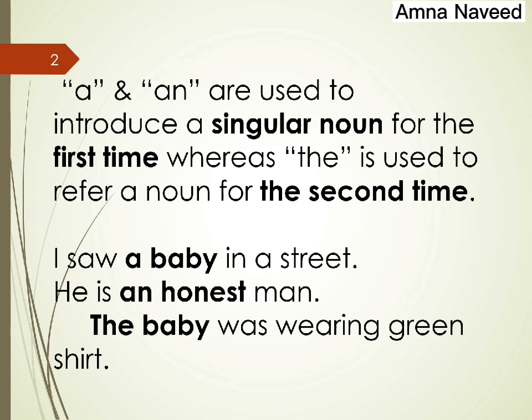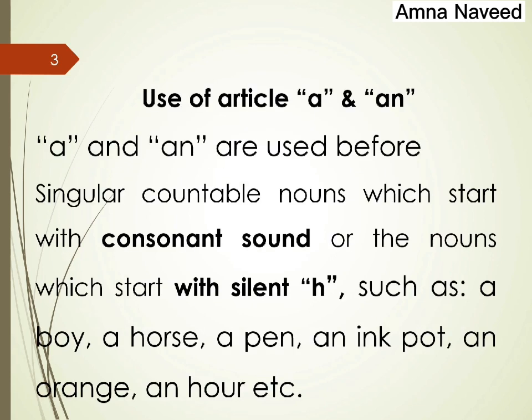Remember that you cannot use 'a' with plural nouns because 'a' means one. So whenever you have to introduce a singular countable noun you must use an article — a or an. The article 'a' is used before singular countable nouns which begin with a consonant sound, whereas we use 'an' with all those words which start with a vowel sound or a silent h.